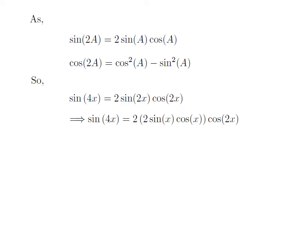So, sin of 4x is equal to 2 into 2 times of sin of x into cosine of x into cosine of 2x. Taking the brackets off, we get sin of 4x is equal to 4 times sin of x into cosine of x into cosine of 2x.